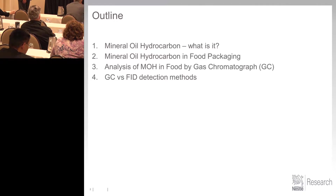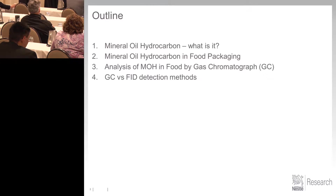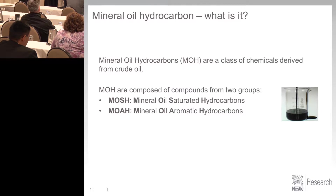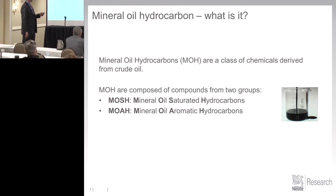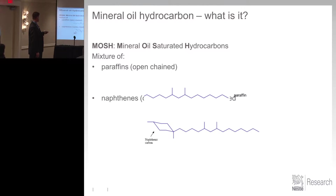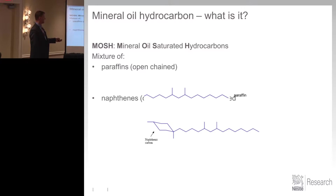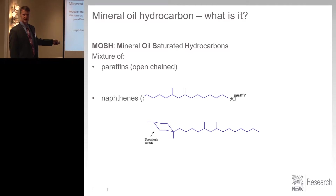So what are they? Mineral oil hydrocarbons are a class of chemical compounds derived from petroleum. Two different subtypes: MOSH, M-O-S-H, mineral oil saturated hydrocarbon, and MOAH, mineral oil aromatic hydrocarbon. There's a distinct difference between these two. So MOSH — saturated hydrocarbons — paraffins, naphthenes, lots of different isomers, lots of different combinations, lots of different chain lengths. We just showed one example here, otherwise it would have been an eye chart.